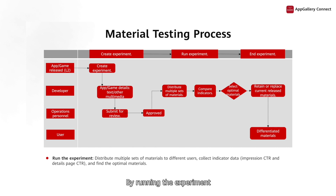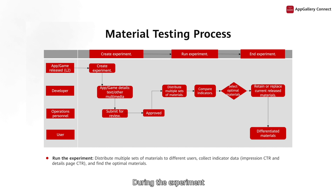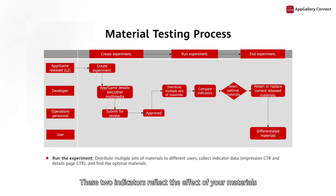By running the experiment, different sets of materials will be distributed to different users through AppGallery. During the experiment, you can check the Impressions CTR and Details Page CTR over a specified period. These two indicators reflect the effect of your materials and function as an important decision-making reference.